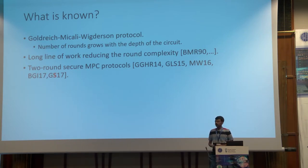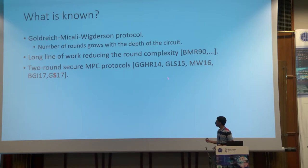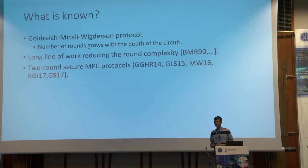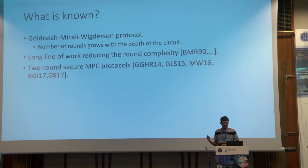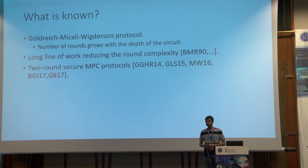Recently there have been several works constructing round-optimal MPC protocols, where round-optimality means two rounds. The first construction was given by Garg et al. in 2014 based on indistinguishability obfuscation. Later, Ananth et al. improved the assumptions to witness encryption. At Eurocrypt 2016, Brakerski and Wichs gave a protocol for computing any multi-party functionality in two rounds from learning with errors. In last year's Eurocrypt, Boyle, Gilboa, and Ishai gave a protocol for a constant number of parties from the DDH assumption. And at FOCS last year, we gave a protocol based on standard assumptions on bilinear groups.